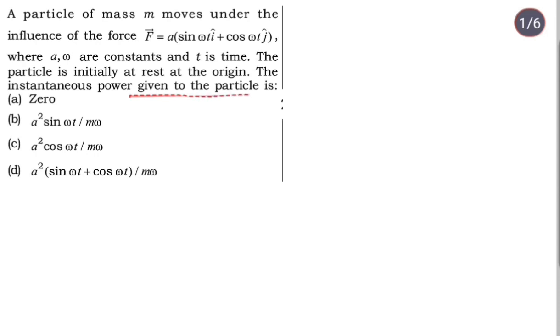So let's see, here we have a force vector given to us, and we need to find the power. This force vector varies with time, so the acceleration vector will be force vector divided by mass. We can write this as a divided by m times (sin ωt i cap + cos ωt j cap).